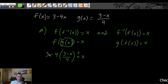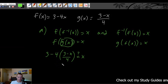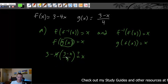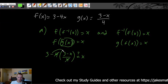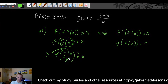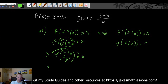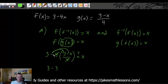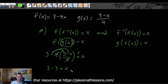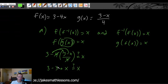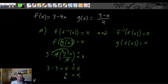Let's simplify. This negative 4 is going to distribute into the parentheses. The 4 will cancel with the 4 in the denominator, and then we need to distribute the minus sign to both terms. So we're going to get 3 minus 3, and negative times negative x gives us plus x. So 3 minus 3 is 0, plus x is x. So x does in fact equal x — the first part is confirmed.